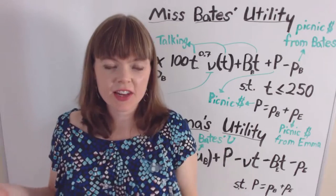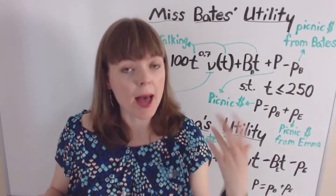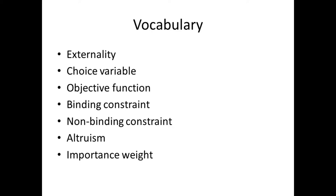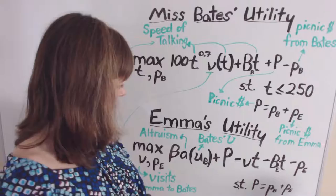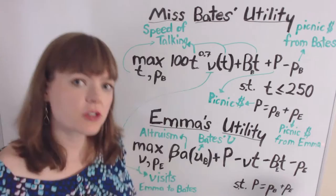This video is going to use an economic model to go over the relationship between Emma Woodhouse and Miss Bates from Jane Austen's Emma. The video will go over a bunch of different vocabulary which you can see on this screen. Now the first question we want to ask ourselves to understand these models is: what are the two characters' choice variables?